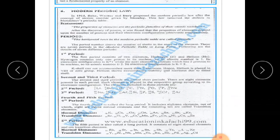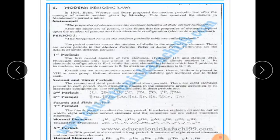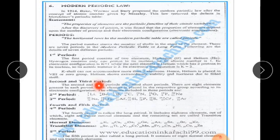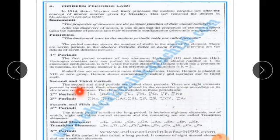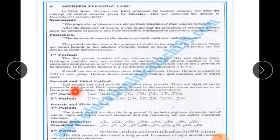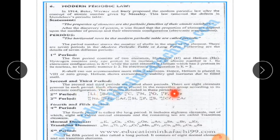Coming to the second and third periods — these are called short periods. There are eight elements in each of these periods. Each element is placed in its respective group according to its electronic configuration.